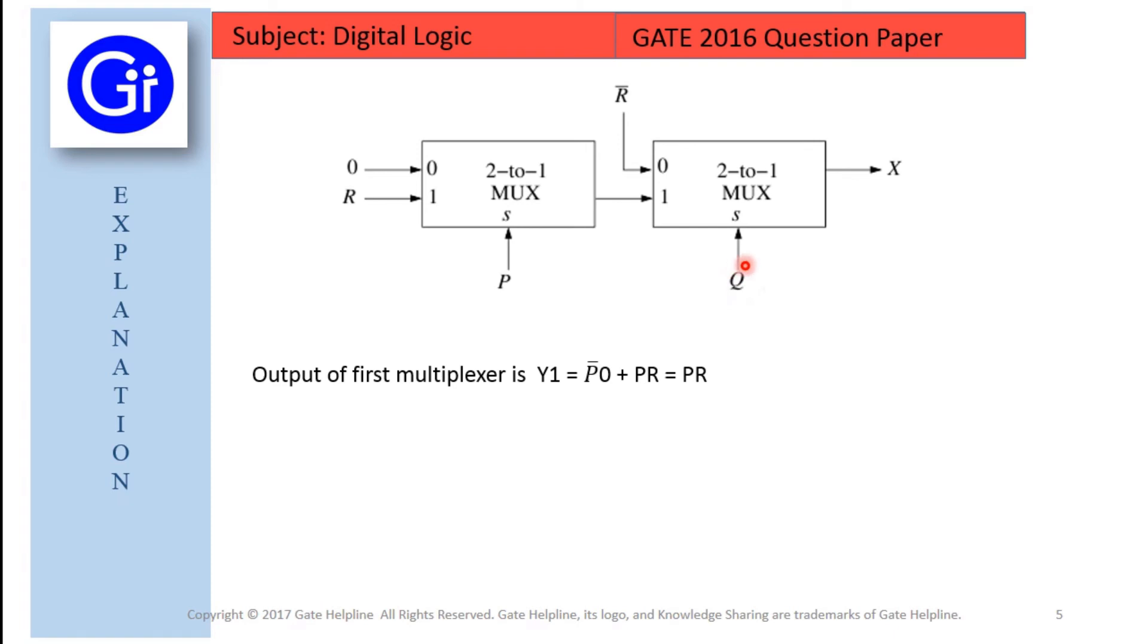So friends, if Q is 0, that is it is Q bar, it will get this as input. So it will be Q bar, R bar. And for Q equals to 1, it will take input from here.